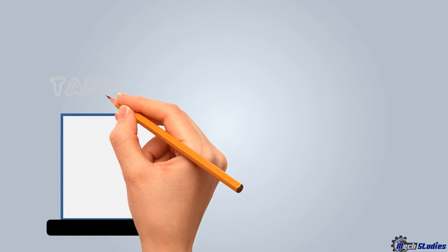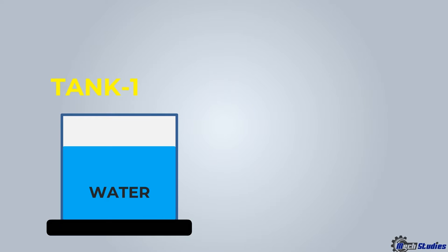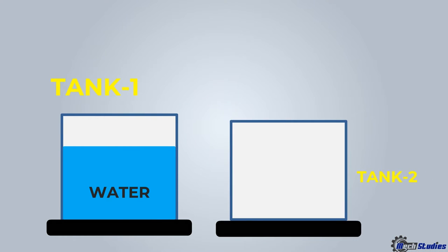Let's try to understand the basics of pump. Take a tank that is tank 1 and fill it with water. Take another empty tank that is tank 2 near to the tank 1. Now if I ask you a simple question: How do you transfer water from tank 1 to tank 2? It is simple. We will take a pipe with a valve and connect it between tank 1 and tank 2. If we open the valve, water will flow from tank 1 to tank 2 due to the difference in height.